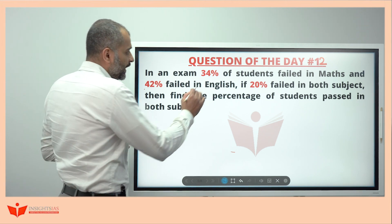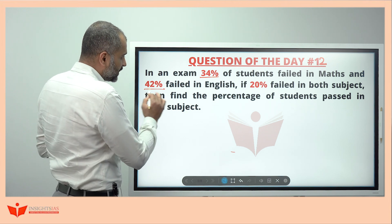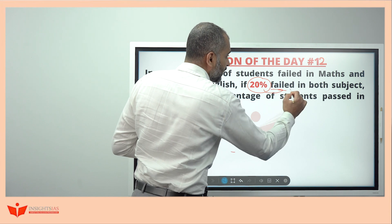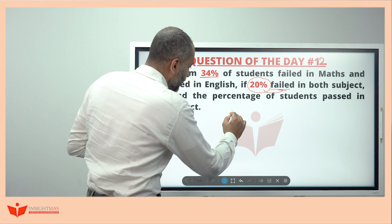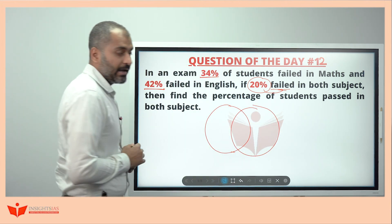Whenever you have two data sets like this - 34% failed in Maths, 42% failed in English and a common of these two data, 20% failed in both the subjects - then we can solve this question using a diagram called Venn Diagram.